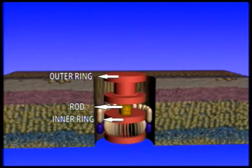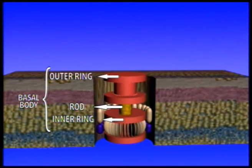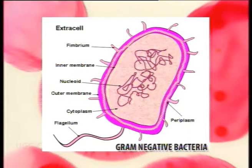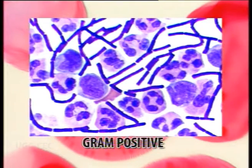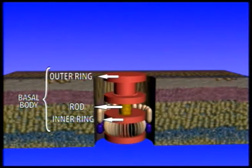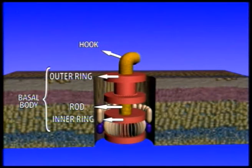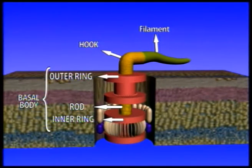A flagellum has three important parts: the basal body associated with the cell membrane and cell wall, the hook, and the helical filament. The basal body consists of a central rod or shaft surrounded by a set of rings. Gram-negative bacteria have two pairs of rings — one pair in the cell membrane and another in the cell wall — while gram-positive bacteria have just one pair of rings. When flagella bundle together and rotate counterclockwise, they allow bacteria to run in a straight line.